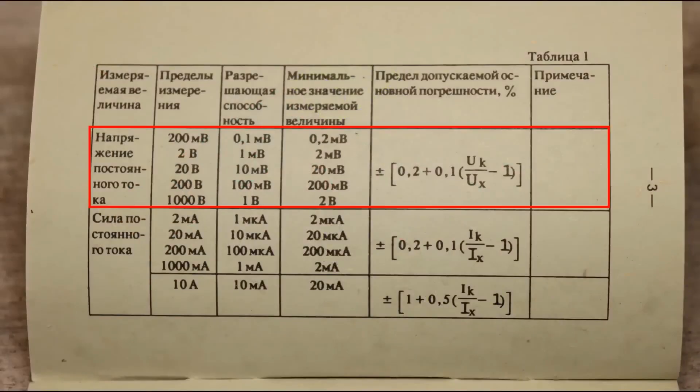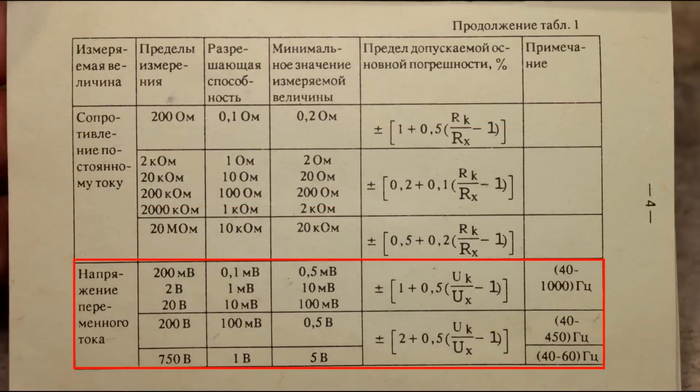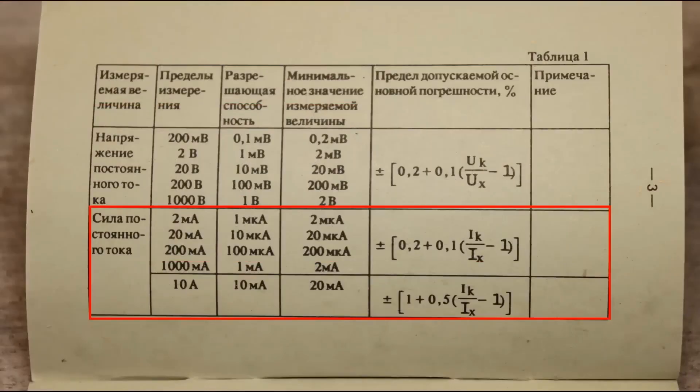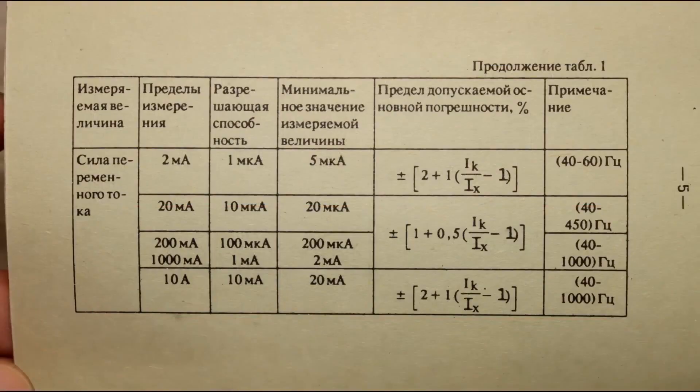It can measure direct voltage up to 1000 volts with an average tolerance of 0.2%, an alternating current up to 750 volts with the frequency of the measured voltage ranging from 40 Hz to 1 kHz, with a tolerance of 1.2%. Resistance up to 20 megaohms, 0.2%. Direct current up to 10 Amperes, with a tolerance of 1%, and in the range up to 1 Ampere, only 0.2%. An alternating current up to 10 Amperes, with a tolerance of 1% in the range up to 1 Ampere, and up to 2% in the range from 1 to 10 Amperes.